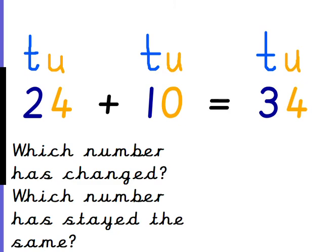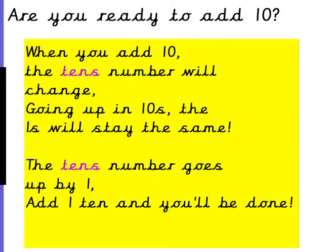Let's look at how we write that down. 24 add 10: if you look at the 10's numbers, 2 add 1 is 3 — it's 2 tens add 1 ten is 3 tens. That number has changed. The number 4 has stayed the same — the 1's number hasn't changed because 4 add 0 is 4. When you add 10, the 10's number will change. Going up in 10's, the 1's will stay the same. The 10's number goes up by 1. Add 1 ten and you'll be done.